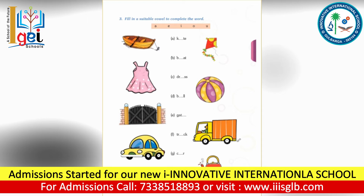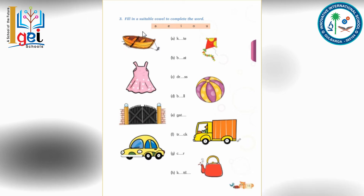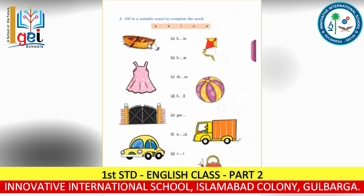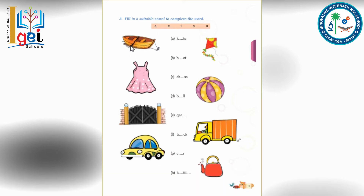See this third side heading: fill in the readable vowels to complete the words. So let's see — this is a boat, B-O-A-T, boat. What is this? This is a kite, K-I-T-E, kite.